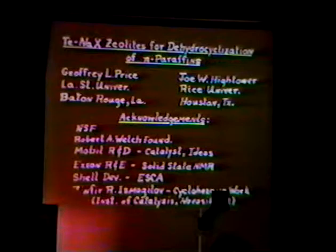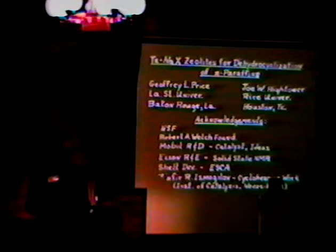Why do we want to do this? Tom has already mentioned octane, and we are still interested in improving octanes. One way of doing it is by upgrading normal paraffins, which have extremely low octanes on their own. You can improve their octanes in at least two ways: one is by isomerizing them, which does a lot of good, but an even better way is to turn these normal paraffins into aromatics. That's what we'll be talking about today.